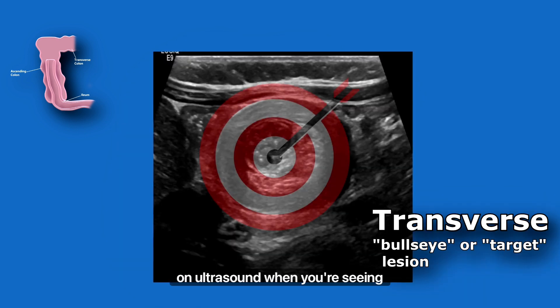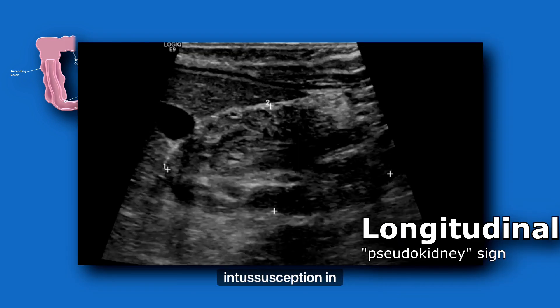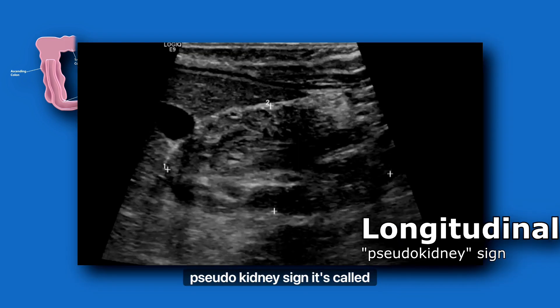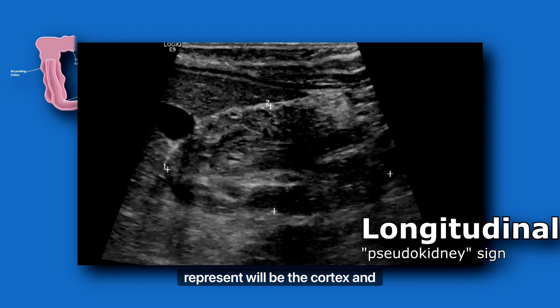On ultrasound, when you're seeing the intussusception in transverse, you'll see what's called a target or bullseye lesion. And when you're scanning the intussusception in longitudinal, you'll see what's called the pseudokidney sign. It's called as such because the mass is oblong like a kidney. The outer parts of the ascending colon represent what would be the cortex, and the mesenteric fat represents what would be the renal sinus.